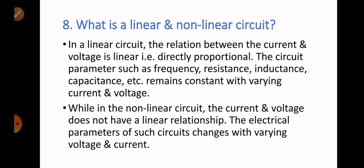Question number eight: what is a linear and nonlinear circuit? In a linear circuit, the relation between current and voltage is linear, that is, directly proportional. The circuit parameters such as current and voltage remain constant with varying current and voltage. In a nonlinear circuit, the current and voltage do not have a linear relationship, and the electrical parameters change with varying voltage and current.